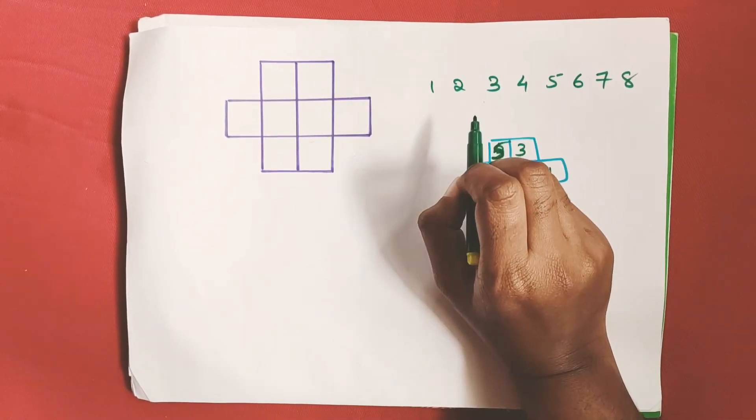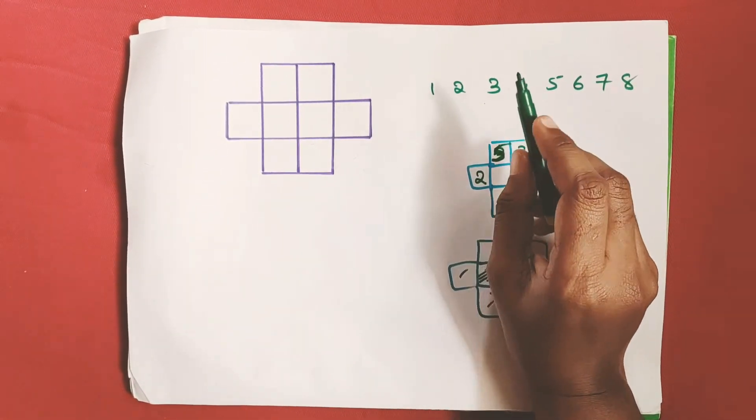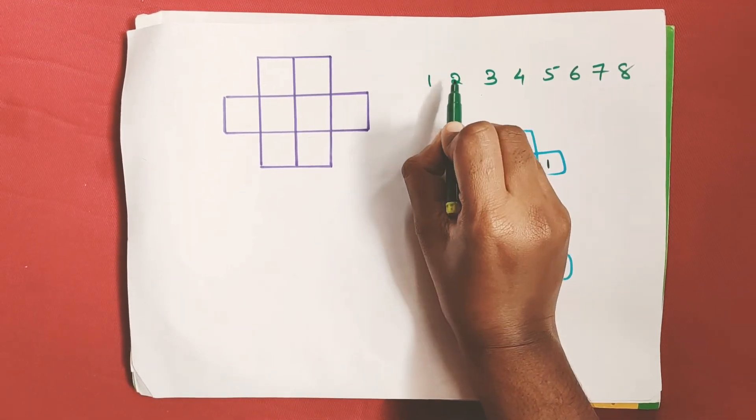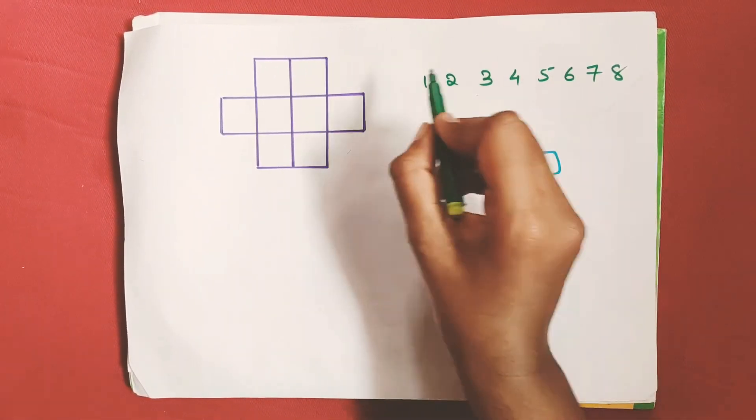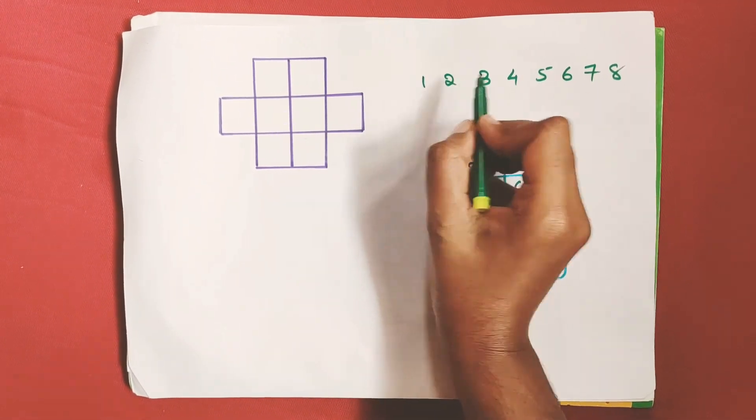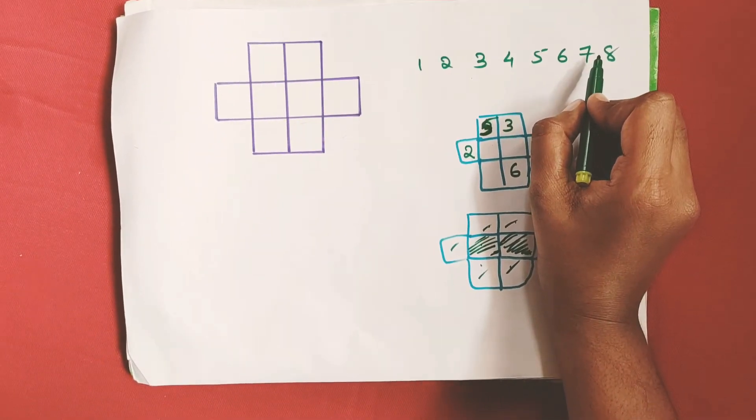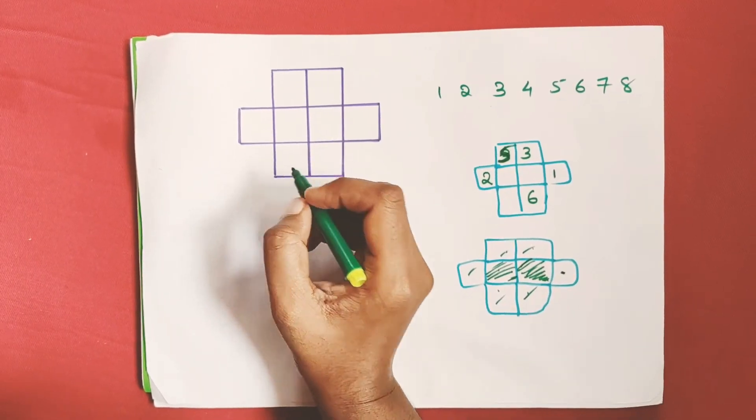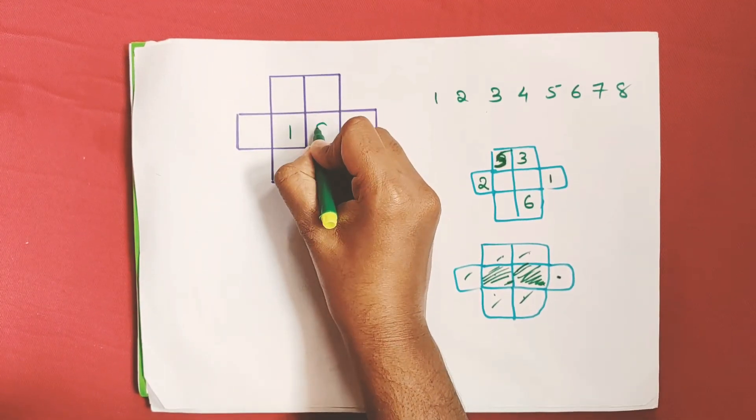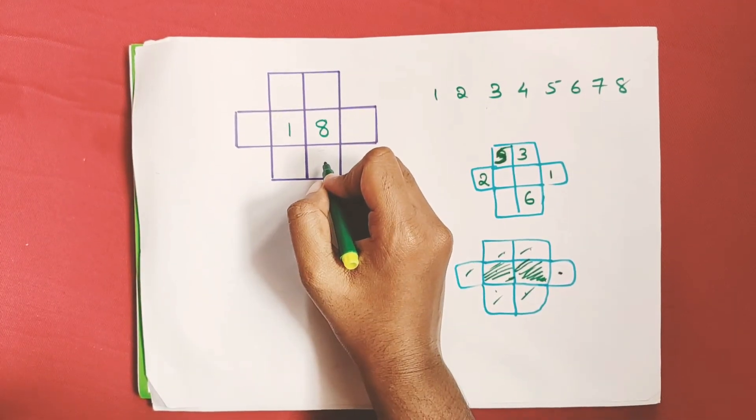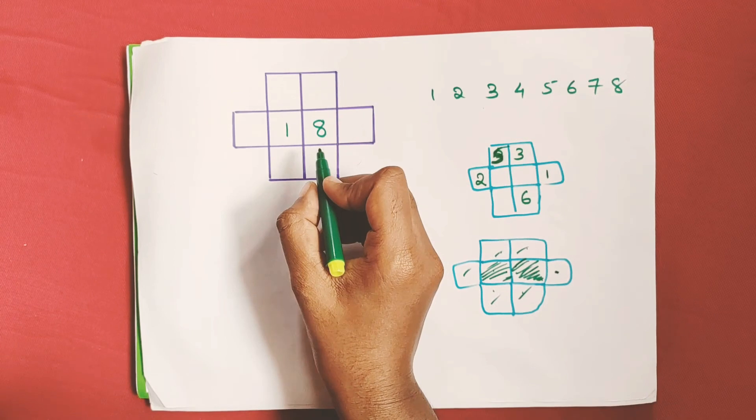Only 1 and 8 have one neighboring number each - that is 2 and 7 respectively. For 1, the neighboring number is 2, and for 8, the neighboring number is 7. Therefore, we have to place 1 and 8 in these corner boxes, and 7 must be here.